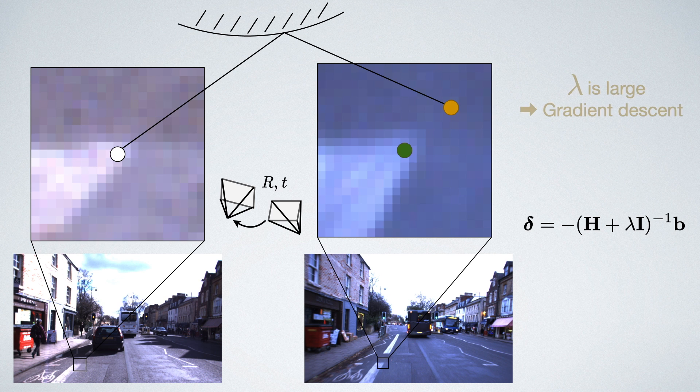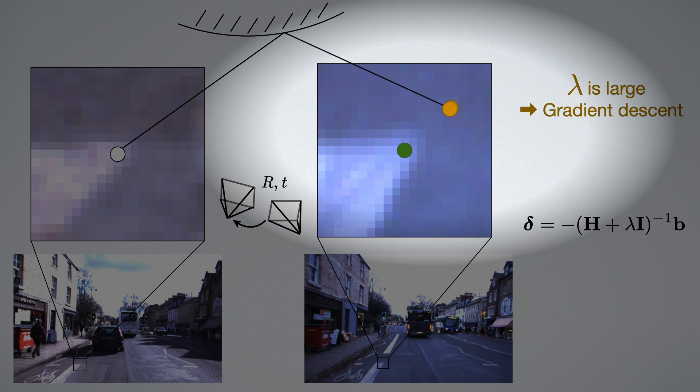Now, in the beginning, lambda will be large and the algorithm behaves like gradient descent. After a couple of updates, the pose will get better and so will the point position.